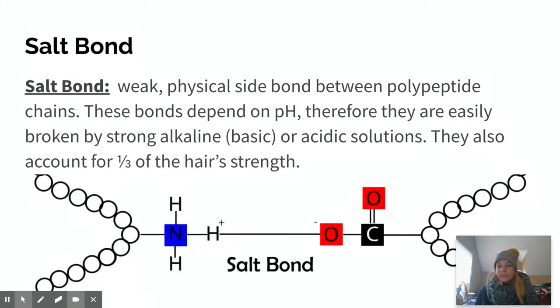A salt bond is also considered weak. It is a physical side bond between polypeptide chains, just like the hydrogen bond. These bonds depend specifically on the pH of the hair, so they are easily broken by alkaline or basic or acidic solutions. So it can go one way or the other.